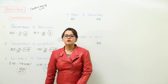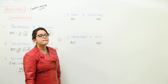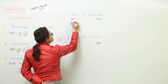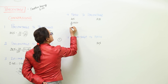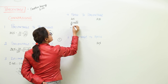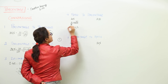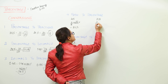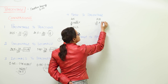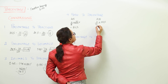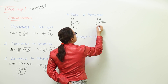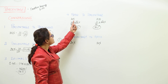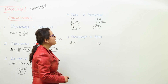Now let us move on to the next conversion where we have to convert ratios to percentage. The first step is to convert the ratio into fractional form and multiply by 100. For 4 is to 5, this simplifies to 80 percent. Similarly, convert 3 is to 10 into fractional form and multiply the fraction with 100 percent. Simplifying gives us 30 percent. So 80 percent and 30 percent are the respective percentages for the ratios 4:5 and 3:10.